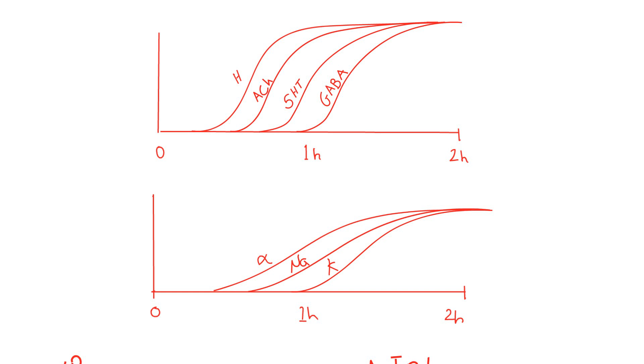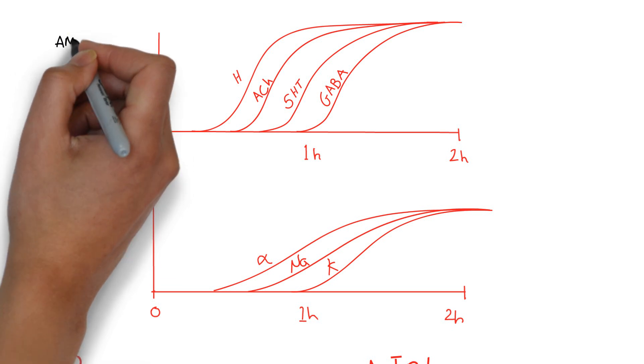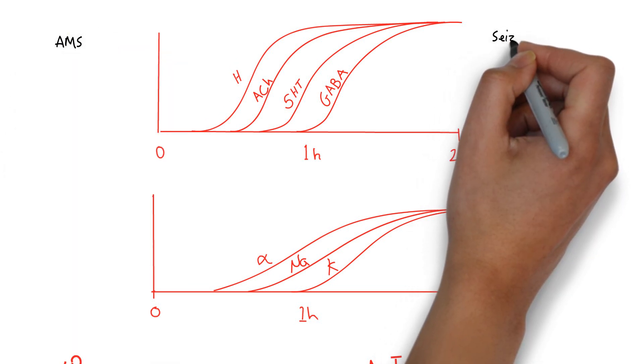All of this can be very scary, especially in the heat of the moment, so let's take a step back and simplify the seven deadly sins. TCA toxidrome is: altered mental status, seizures,